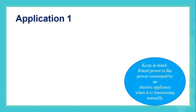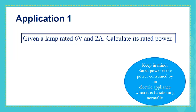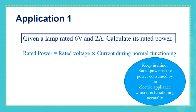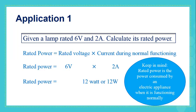Let's solve this application. Keep in mind: rated power is the power consumed by an electric appliance when it is functioning normally. Given a lamp rated 6 volts and 2 amperes, calculate its rated power. To calculate rated power, we multiply the rated voltage by the current during normal functioning: 6 volts times 2 amperes equals 12 watts. So, the rated power is 12 watts.